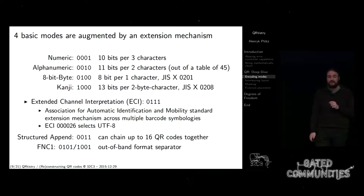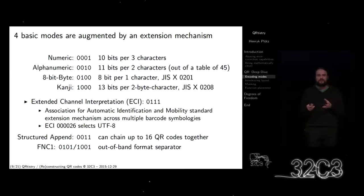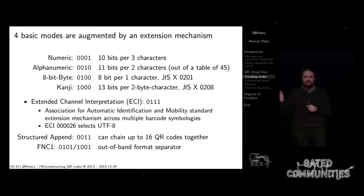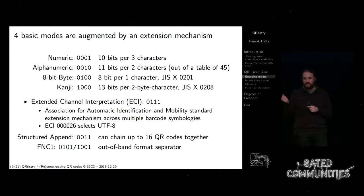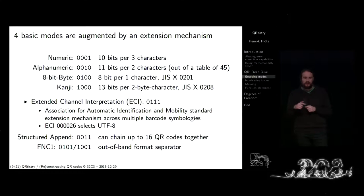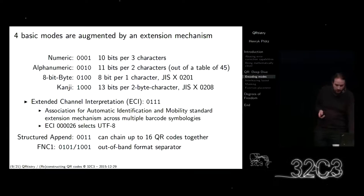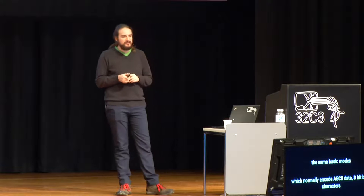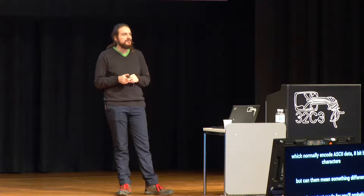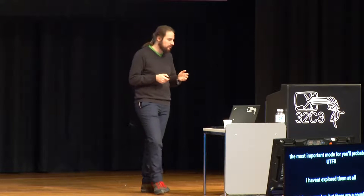There is also something called Extended Channel Interpretation, or ECI. With this you can switch between different interpretations — using the same basic modes that normally encode ASCII data, but making them mean something different. The most important mode for most of you will probably be UTF-8. There are a couple of different modes; I haven't explored them all. I'm guessing you can also add some degrees of freedom by choosing a different mode, though it might be doubtful that all readers can read that.